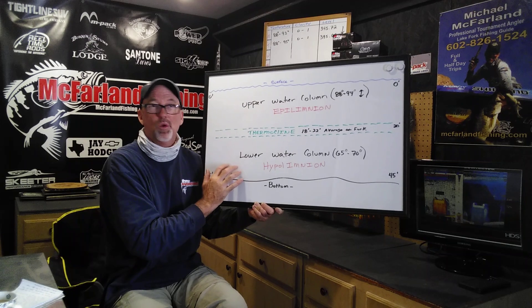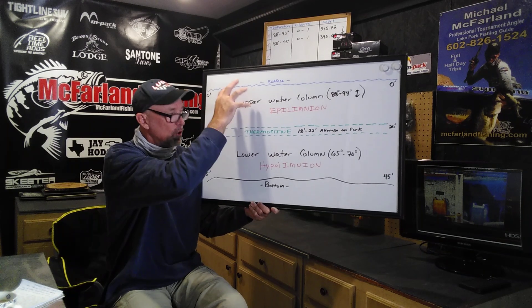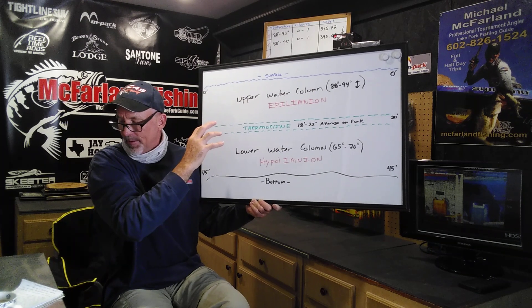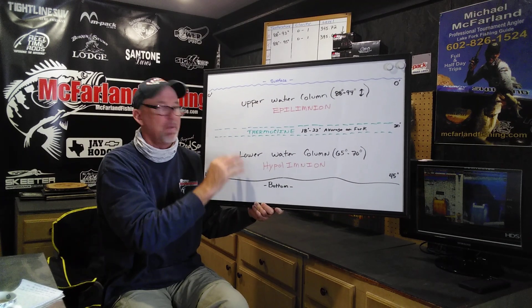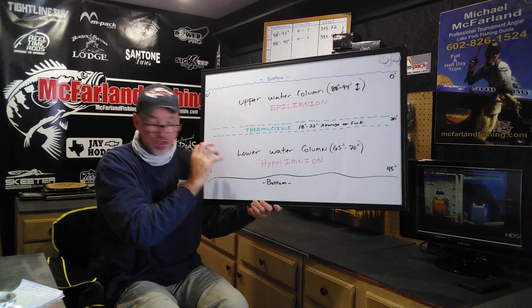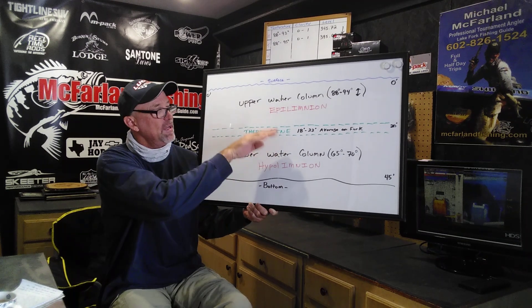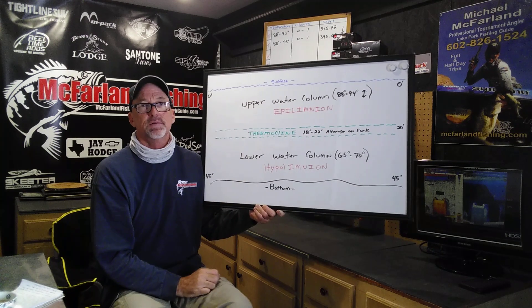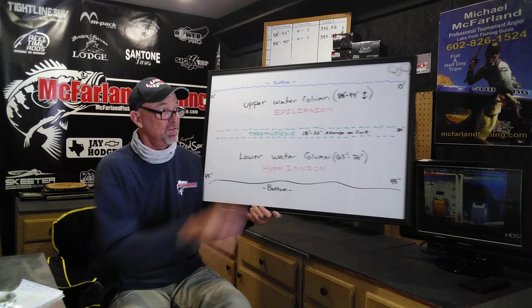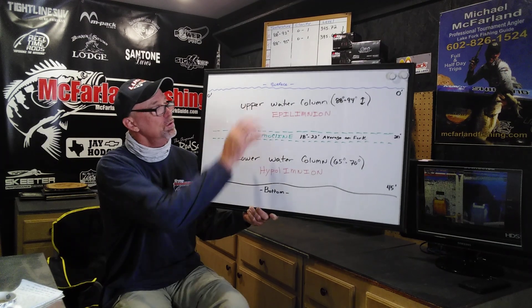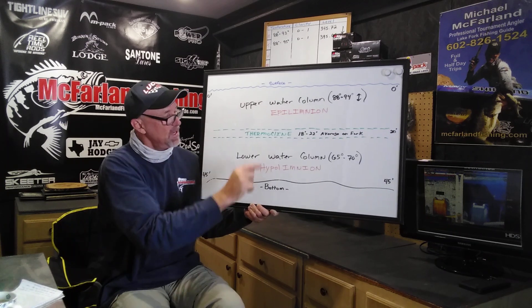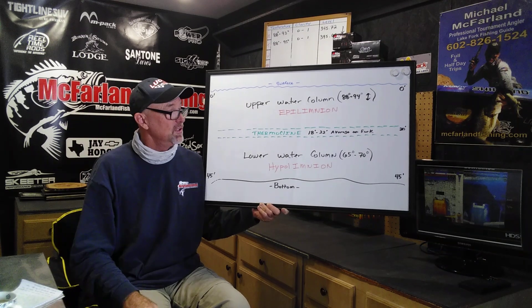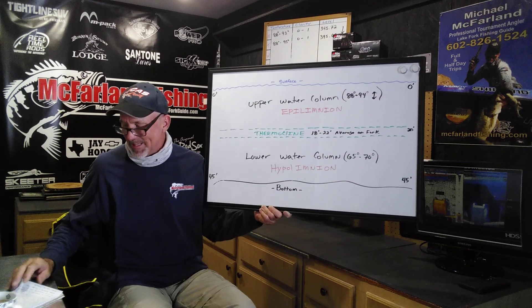Now we have two separated water columns. One has no oxygen below, and the one above has minimum oxygen because it's very hot — uncomfortable to the fish. These two layers are called the epilimnion and hypolimnion. Those are the scientific words for those two water columns. When the lower body gets void of oxygen, it forces the fish to use the more uncomfortable upper water column due to oxygen only. These fish are now in super hot water that they don't necessarily like.